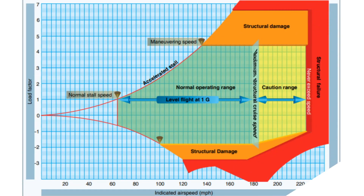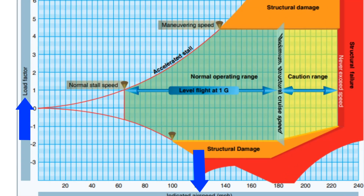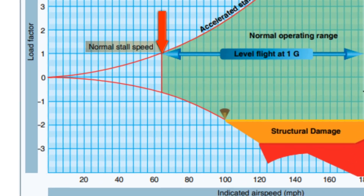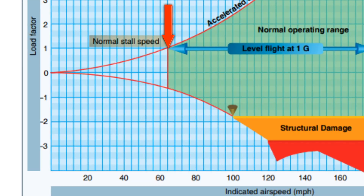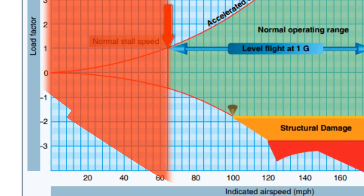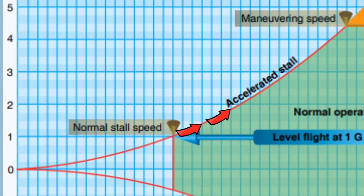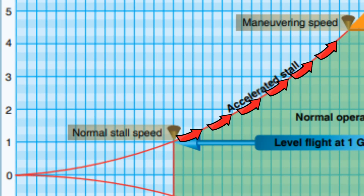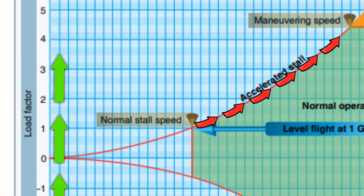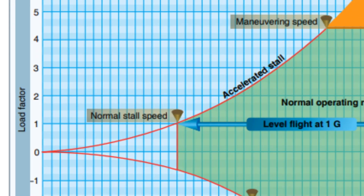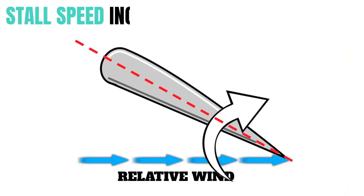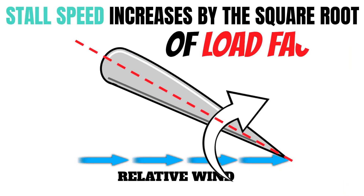Take a look at this chart from the Pilot's Handbook of Aeronautical Knowledge. On the left we have load factor, and on the bottom we have speed. First, notice your normal stall speed — below this speed the airplane will stall no matter what the load factor is. But notice the curved line above the normal stall speed: as load factor increases, so does stall speed. Stall speed actually increases by the square root of your load factor.